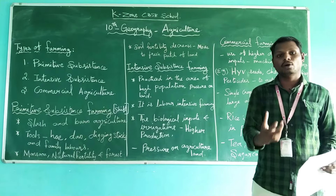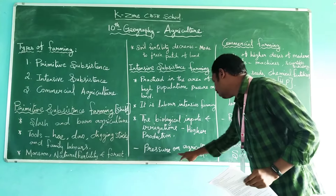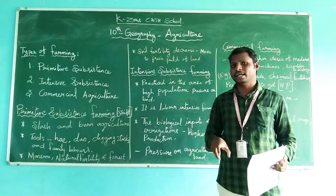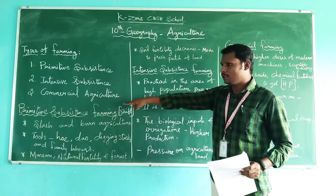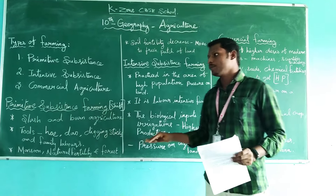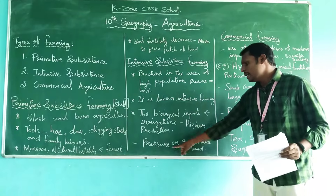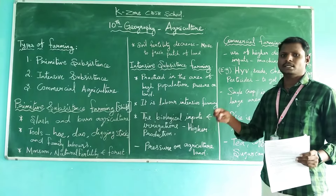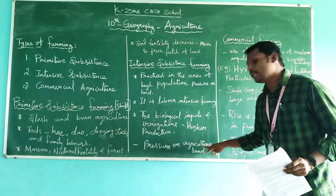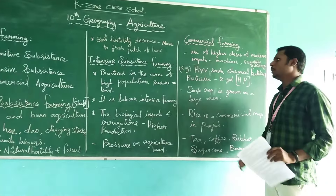They use biological inputs to increase the quantity of production. An important concept here is 'pressure on agricultural land.' In the primitive method, when soil fertility decreases, farmers shift to another patch of land and the soil quality is not permanently damaged. But in intensive subsistence farming, more biological inputs like chemicals and pesticides are used, which causes the agricultural land to get spoiled over time.